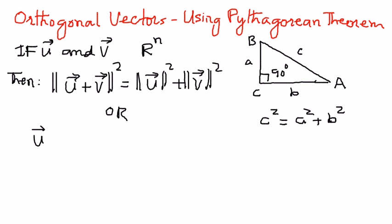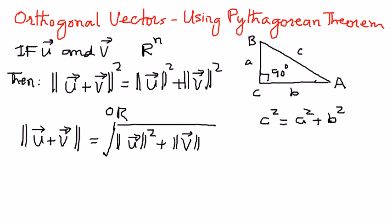Also, vector U and vector V are orthogonal, or perpendicular, if vector U dot vector V is equal to 0. So, that is another condition we can check.